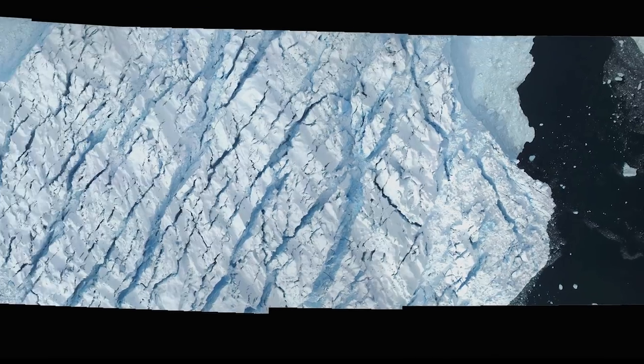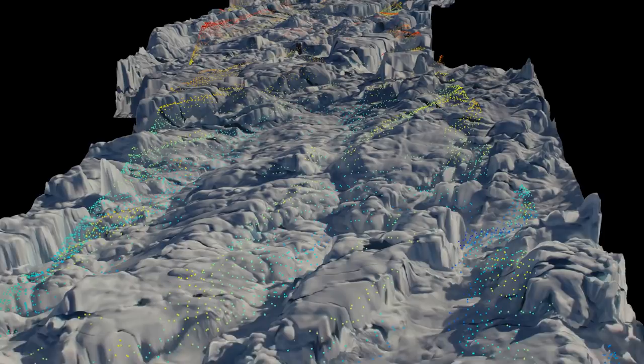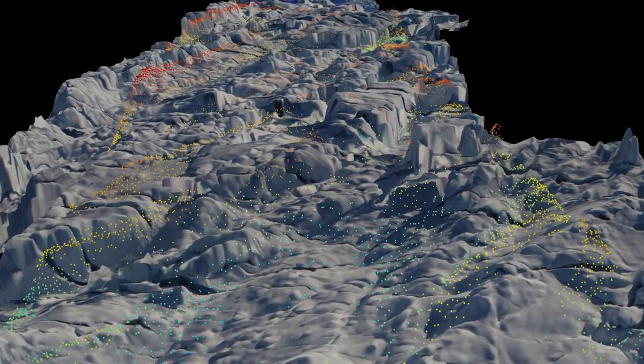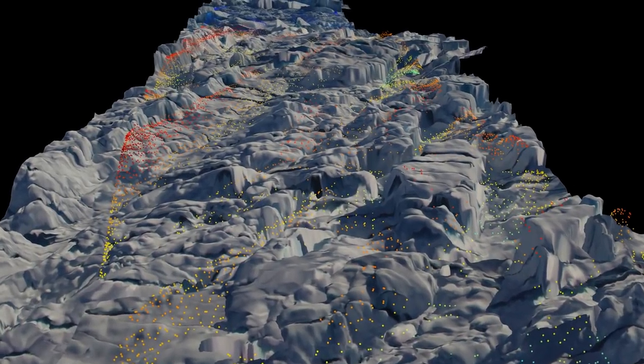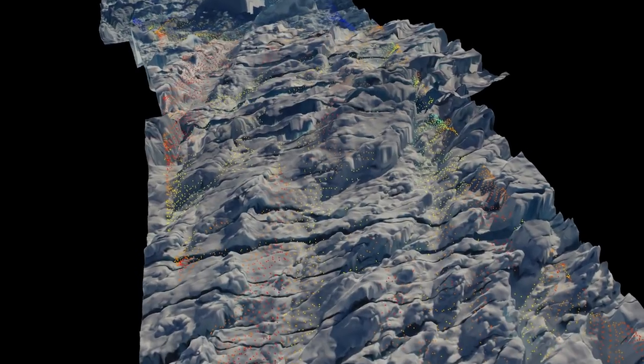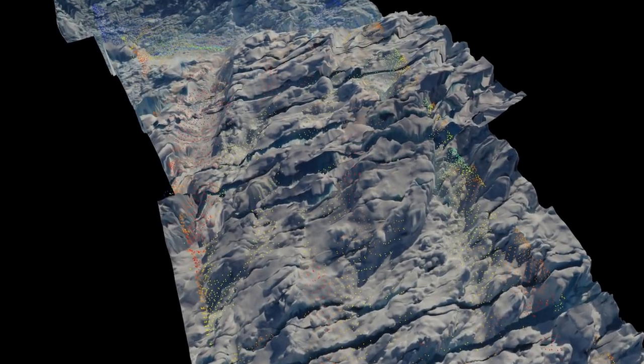These images can be pieced together into a mosaic, and since they overlap, provide us with a stereoscopic view of the ice and an elevation model of their own. Here is that model overlaid onto the laser data as we approach Helheim's 70-meter-high calving front.